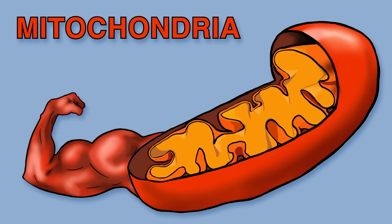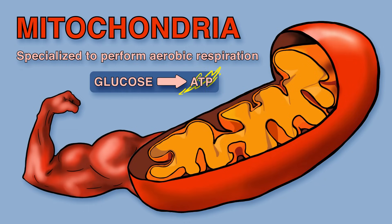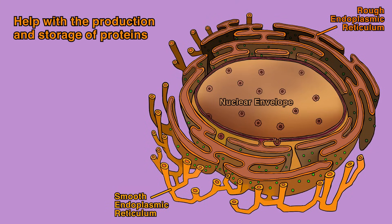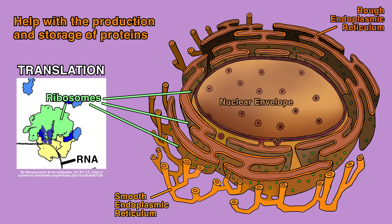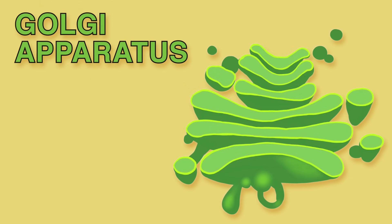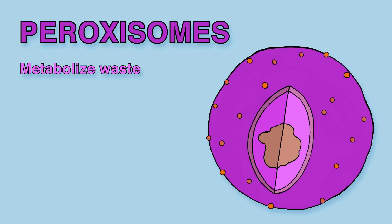Mitochondria are the powerhouses of the cell. They are specialized to perform aerobic respiration, converting glucose to ATP, which is the energy currency of the cell used to perform functions necessary for life. Both rough and smooth endoplasmic reticulum help with the production and storage of proteins. The rough endoplasmic reticulum is covered in ribosomes, which translate RNA into protein. The smooth endoplasmic reticulum makes lipids. The Golgi apparatus modifies proteins. Peroxisomes metabolize waste.